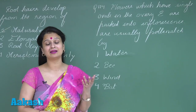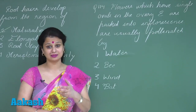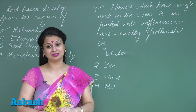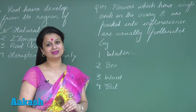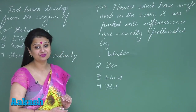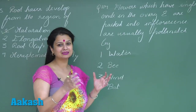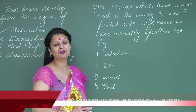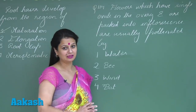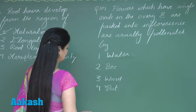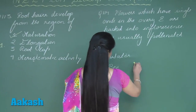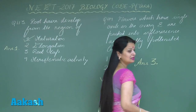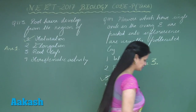In grasses, that is the Poaceae family, only a single ovule is present in the ovary. Along with that, they have small-sized flowers packed into the inflorescence. All these features are characteristic of anemophily, that is wind pollination. So the right option for this question is option number three.